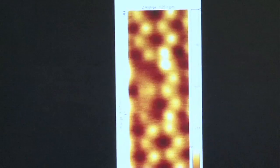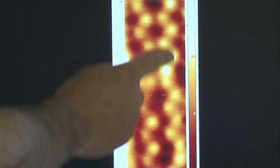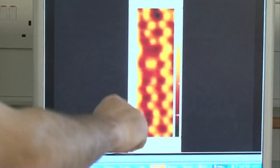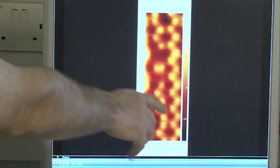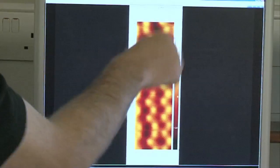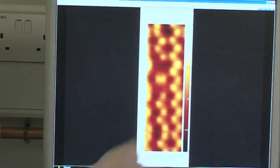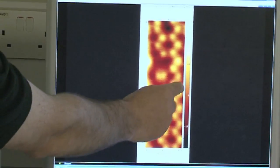So we're looking again at those rows of silicon atoms. So here's one row, here's another row. We're basically changing the orientation of these dimers along this row by using the tip to influence each dimer. So we are flipping individual atomic switches basically.